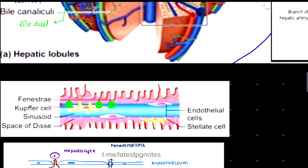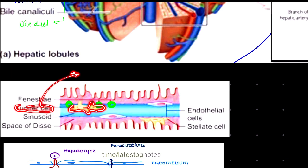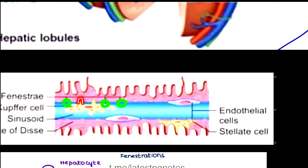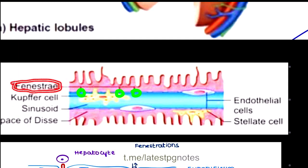Within the sinusoids, we can see Kupffer cells. These Kupffer cells are derivatives of monocytes and have a phagocytic function. They contain pseudopodia, which are responsible for capturing antigens.